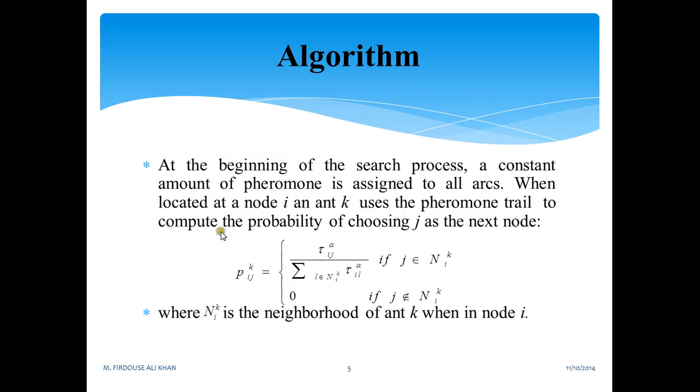Now this is the algorithm. At the beginning of the search process, a constant amount of pheromone trail, that is a chemical substance, is assigned to all arcs. When located at a node i, ant k uses the pheromone trail to compute the probability of choosing j as the next node. This is what the equation says, where N_i^k is the neighborhood of ant k when in node i.